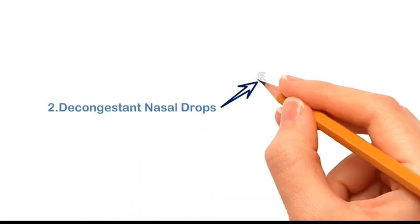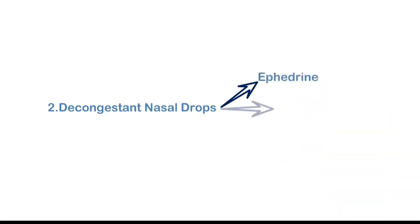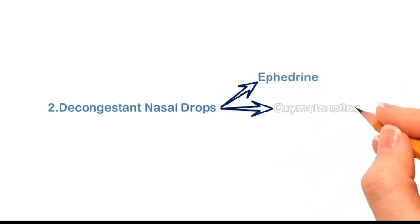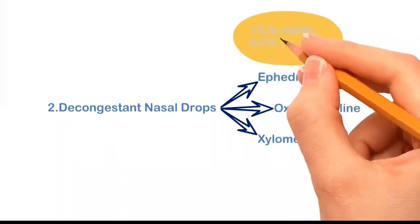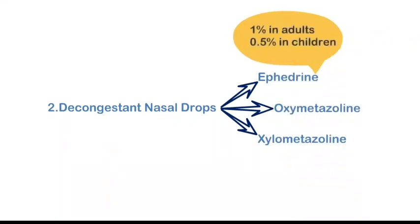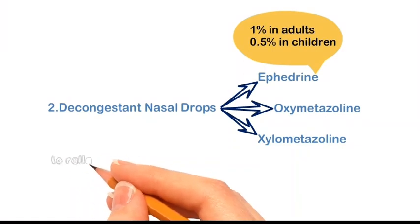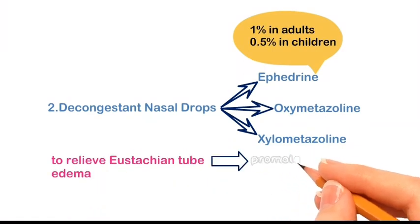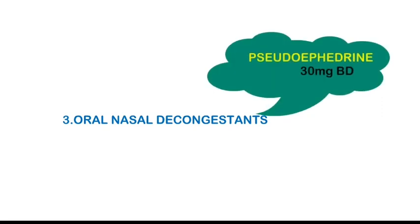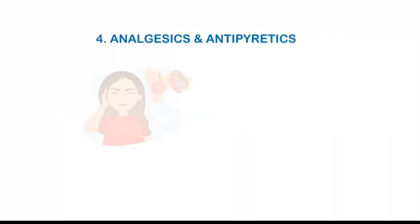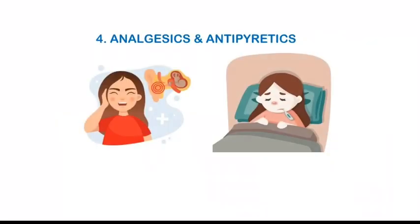Decongestant nasal drops include ephedrine, oxymetazoline, and xylometazoline — 1% in adults and 0.5% in children — to relieve eustachian tube edema and promote ventilation of the middle ear. Oral nasal decongestants like pseudoephedrine 80 mg BD may be given. Analgesics and antipyretics should be given for pain and fever.